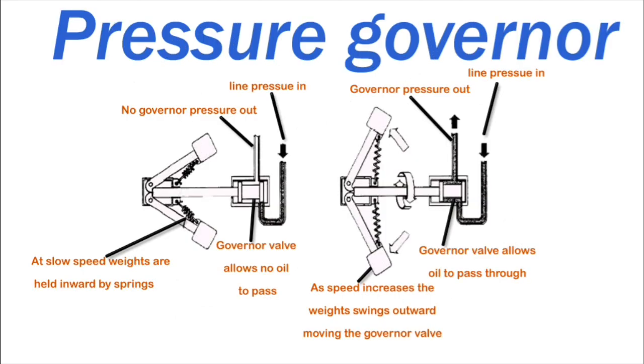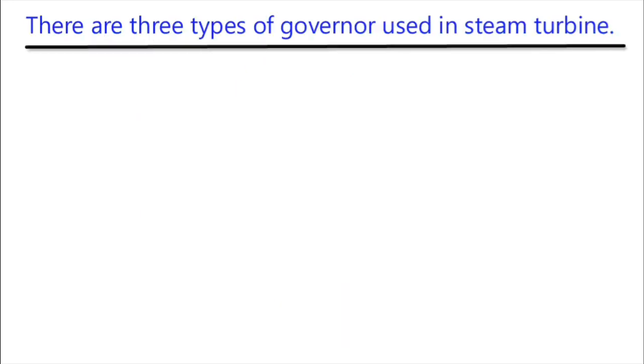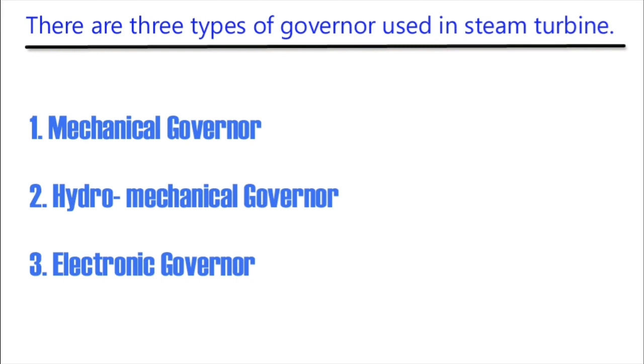Pressure Sensitive Governor. These are applied to back pressure and extraction turbines in connection with the speed sensitive governor. There are three types of governor used in steam turbine: Mechanical Governor, Hydro-Mechanical Governor, and Electronic Governor. In the case of a small turbine, oil relay type Hydro-Mechanical Governor is used. For the larger turbine, electronic governor is used.